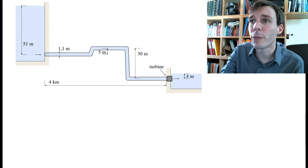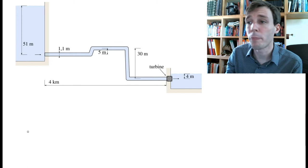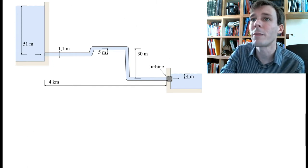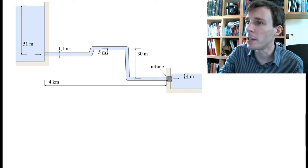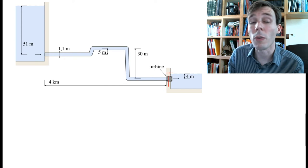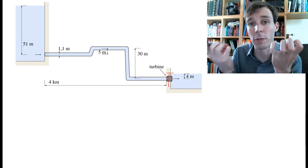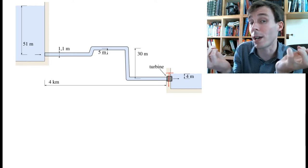In this first section of the problem we have no flow. The turbine is closed - there's a valve here that is closed, so there is no flow. The question is: what is the pressure difference applying between the two sides of the turbine?